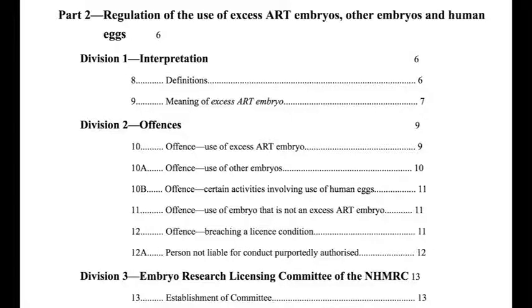The final intrinsic guide is headings. Each section, division, part, and chapter has its own heading, and depending on how good the drafter was, those headings can sometimes be extremely helpful as guidelines to what the section is intended to mean. For example, in the Research Involving Human Embryos Act 2002, Section 11 is headed 'Offence — Use of Embryo That is Not an Excess ART Embryo.' The contents page also reveals a section called 'Meaning of Excess ART Embryo' — a perfect example of how helpful a good section heading can be.